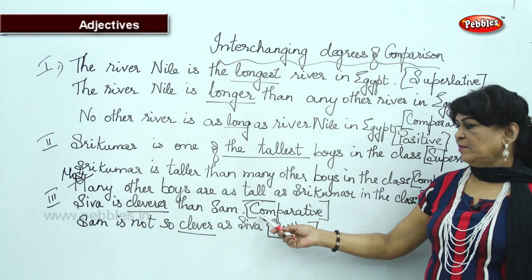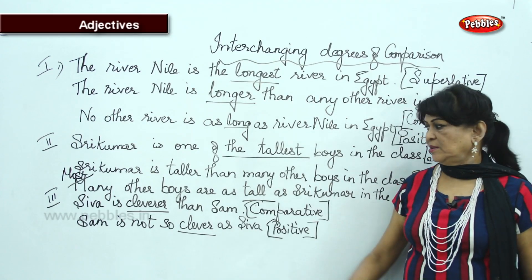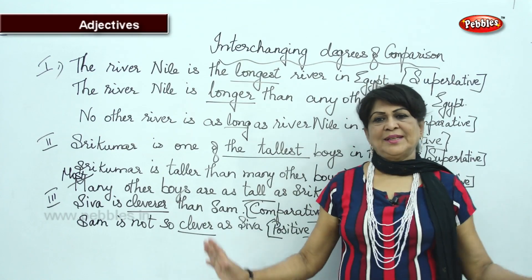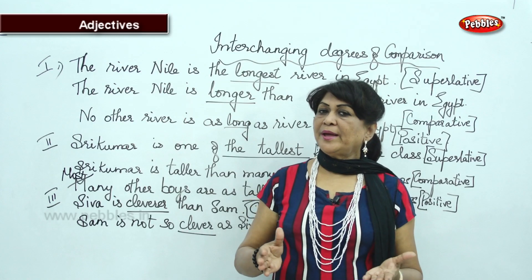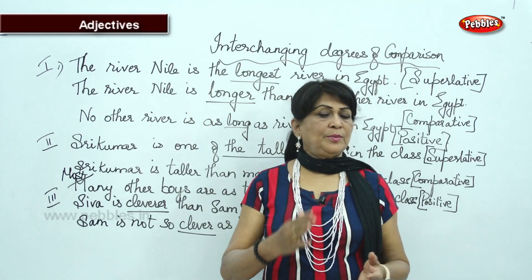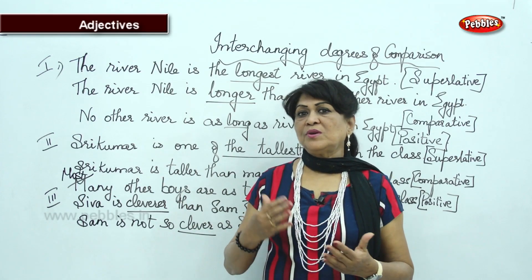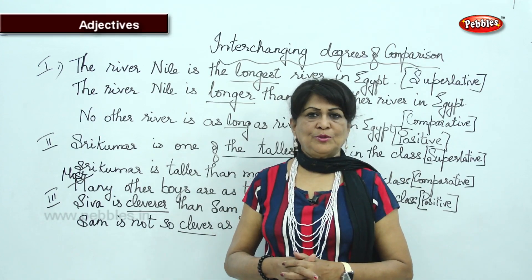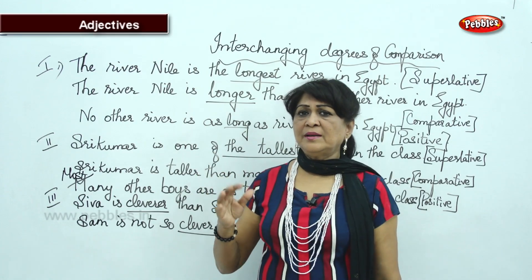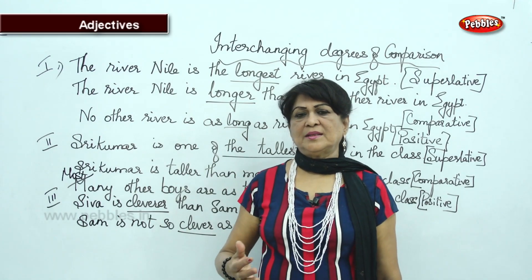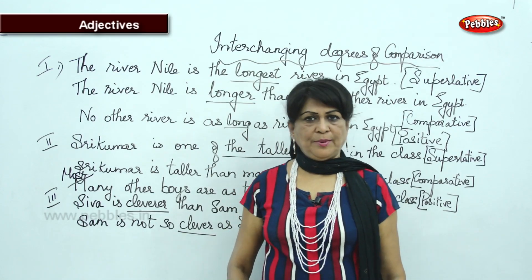'Shiva is cleverer than Sam' — comparative. 'Sam is not as clever as Shiva' — that is positive. So cleverer and clever. You have learnt how to interchange superlative to comparative, comparative to positive, and this will be very useful for your higher classes also. We will do more revision after completing the whole grammar portion. I have taught you the basics and given you exercises, and after completion I am going to give you another test paper.